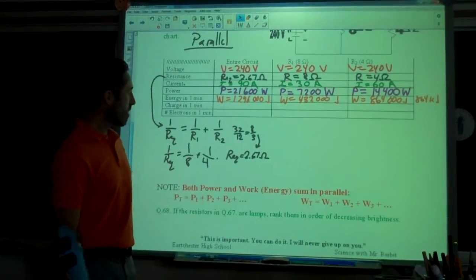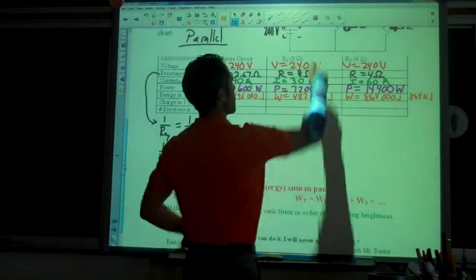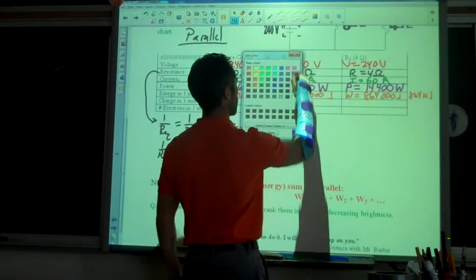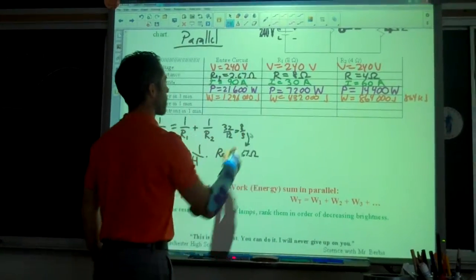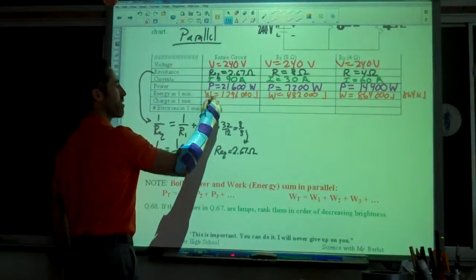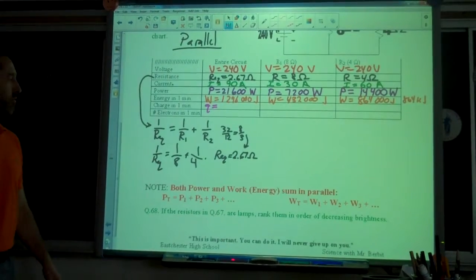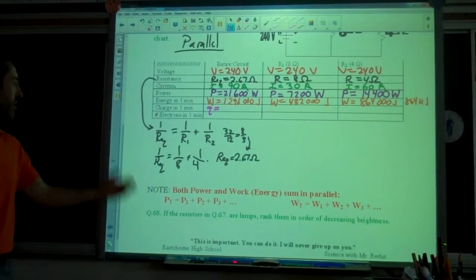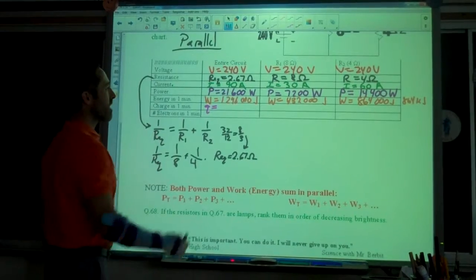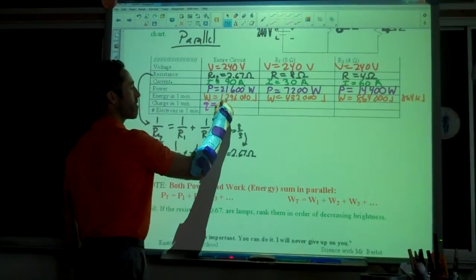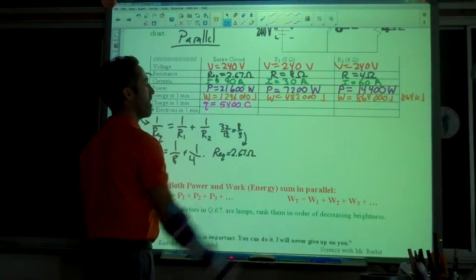Quick version over here. Find the charge. This is nothing at this point. We know how to do this. Look, we're working pink because it's nice. Q, you can do it. If you want to do V over W, fine. I don't care. If you want to do I times T, that's fine too. One minute, I times T. 90 times 60. Well, that's easy. 5,400 coulombs.